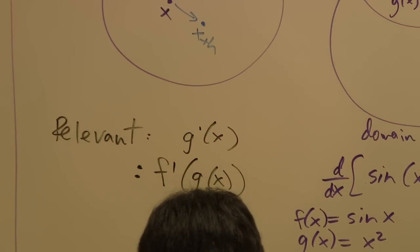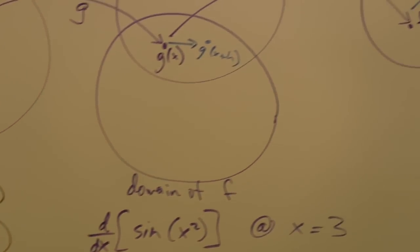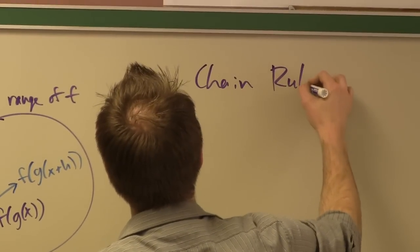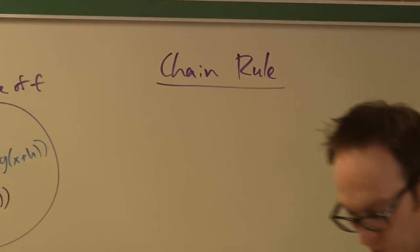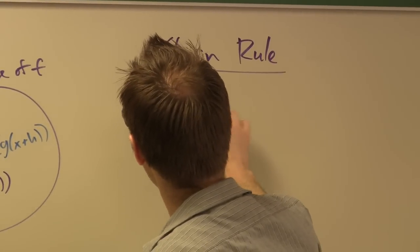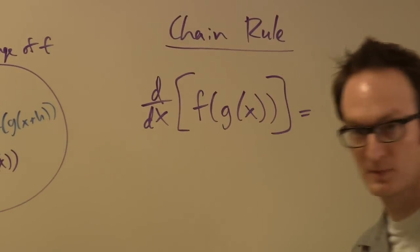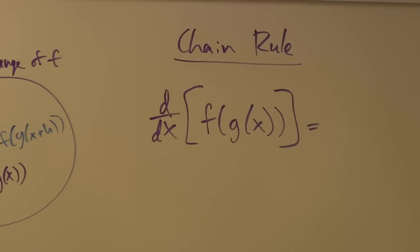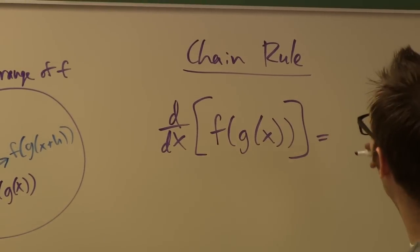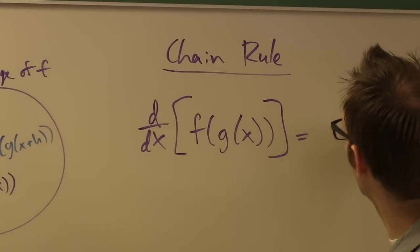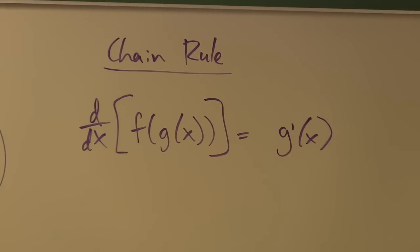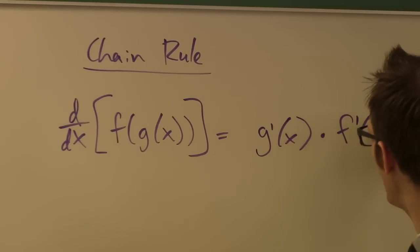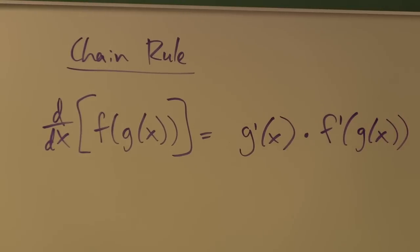Here is what this is called: the chain rule. The chain rule says that if you are taking the derivative of something of the form f of g of x, you get the derivative of g — which we already talked about as being relevant — times the derivative of f at g of x. In other words, it is just the product of these two things.